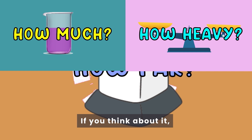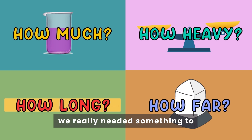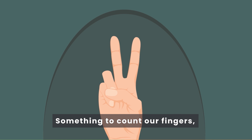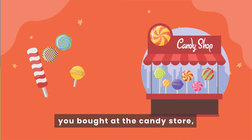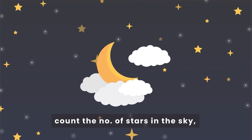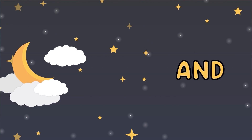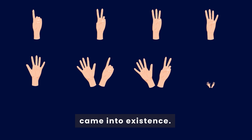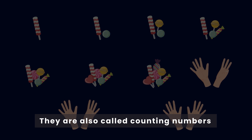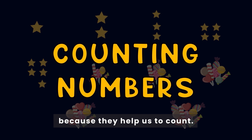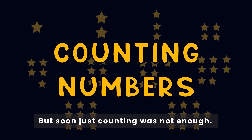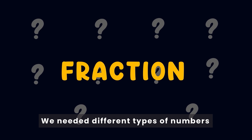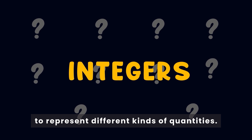If you think about it, we really needed something to help us with counting — something to count our fingers, count the number of chocolates you bought at the candy store, count the number of stars in the sky, and so on. That's how all of these numbers came into existence. They are also called counting numbers because they help us to count. But soon, just counting was not enough. We needed different types of numbers to represent different kinds of quantities.